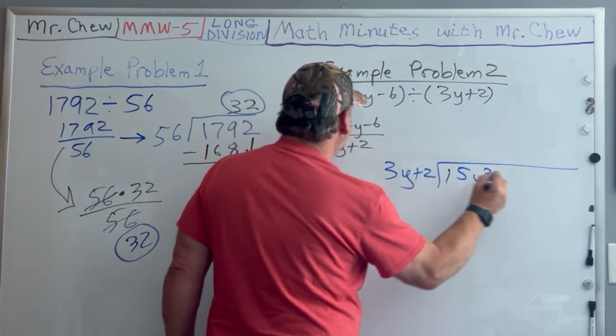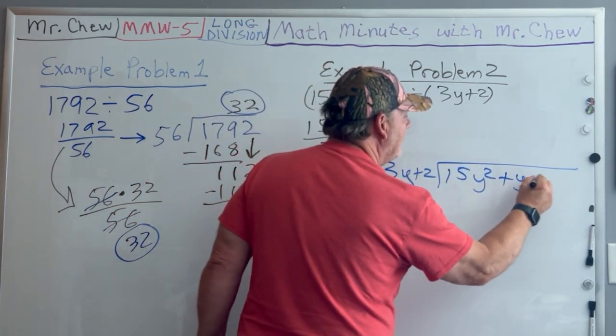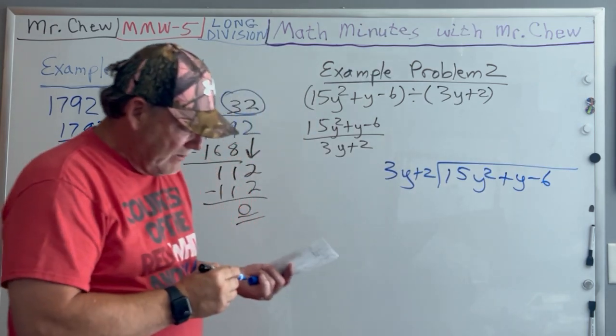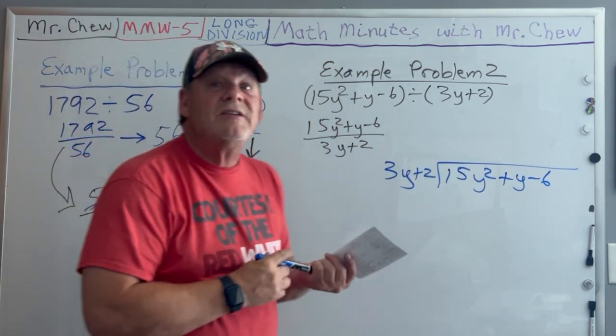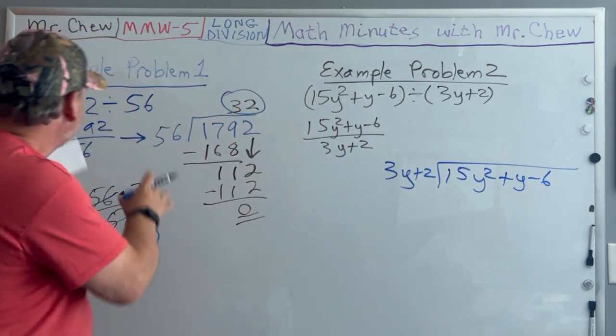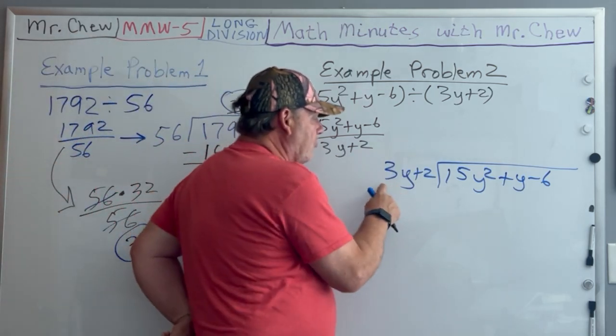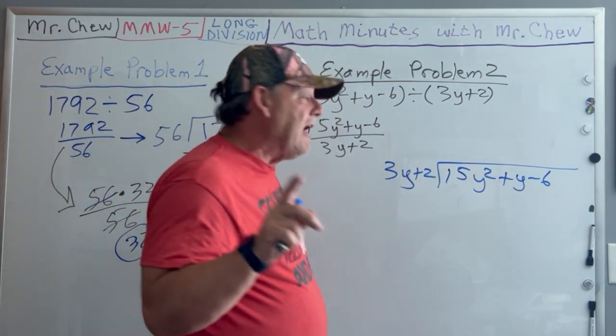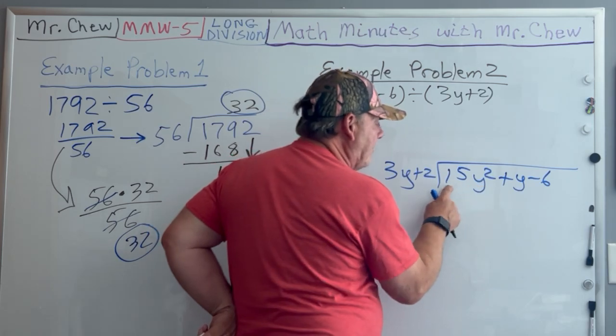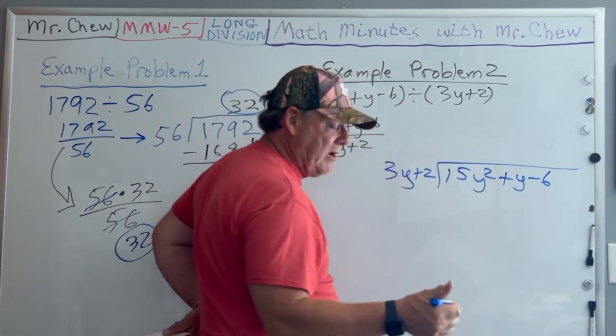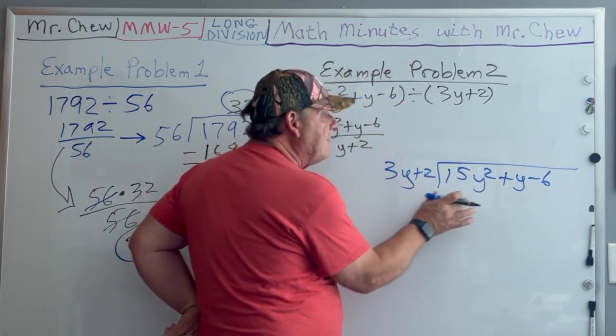This is a little bit different but still follows the same way. I look at this first term 3y and ask can I divide this into 15y²? This has to be in descending order, and it is. 3y divides into 15y² 5y times.